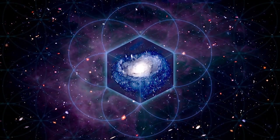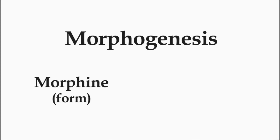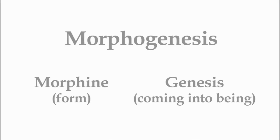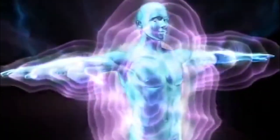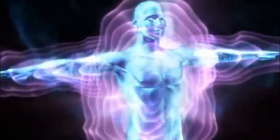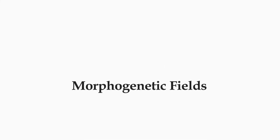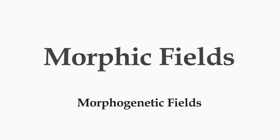Morphogenetic fields are fields that shape form in living organisms. The very word morphogenesis comes from the Greek words morphe meaning form and genesis meaning coming into being. Morphogenetic fields are regions of activity that shape developing organisms. They're one kind of a larger category called morphic fields.